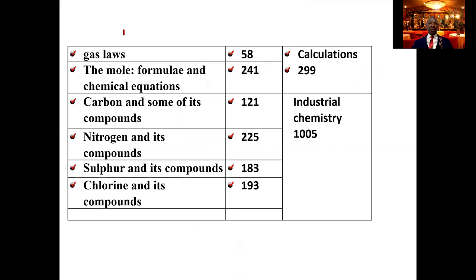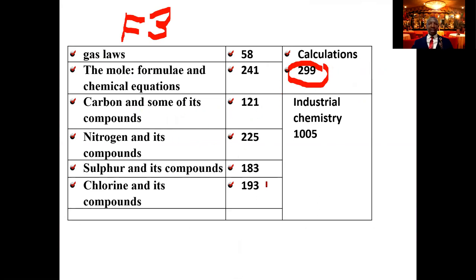Let us look at Form 3. We have gas laws giving 58 marks. The mole — covering all calculations — gives 299 marks. Carbon and its compounds, nitrogen, sulfur — these fall under industrial chemistry and together give about 1,000 marks. Industrial chemistry is very important. You will rarely miss a question from this particular area. This is also where you are going to find the preparation of gases, which is very important to capture.